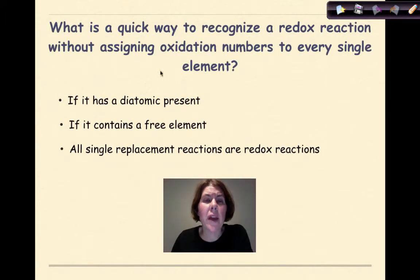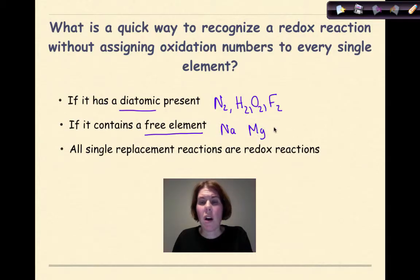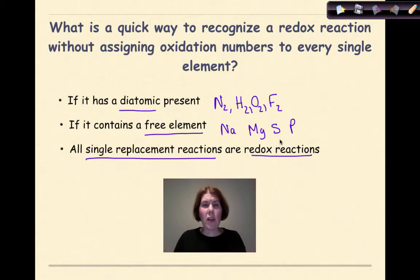What is a quick way to recognize a redox reaction without assigning oxidation numbers to every single element? These are some absolute ways that you can use to really quickly recognize a redox reaction. Look for a diatomic element: diatomic nitrogen, hydrogen, oxygen, fluorine. Any of these will basically indicate that you're dealing with a redox reaction. If it contains a free element, a metal or non-metal by itself—sodium, magnesium, sulfur, phosphorus—we classify all of these as free elements. All single replacement reactions are redox reactions. We're going to have a free element by itself combining with an ionic compound to form a new ionic compound and another free element. Easy way to recognize a redox reaction.